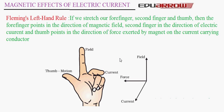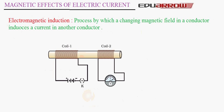Let us now understand electromagnetic induction. When current flows through a conductor, a magnetic field is produced. Similarly, when a conductor moves in a magnetic field, current is produced. Electromagnetic induction is defined as the process by which a changing magnetic field in a conductor induces a current in another conductor. This principle is used to generate electricity.